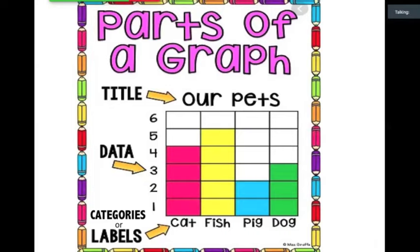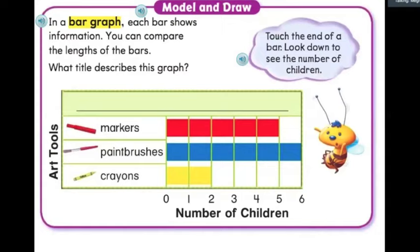Now that we've learned a little bit about bar graphs, here's a photo that shows us the parts that a bar graph should have. Bar graphs have a title. Remember, that tells us what the graph is about. It also has a number line and labels.